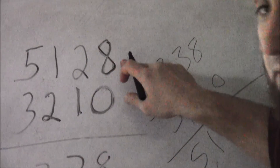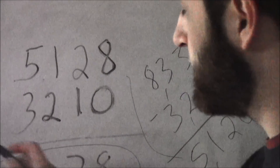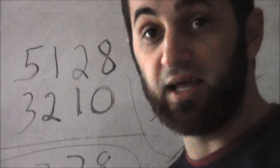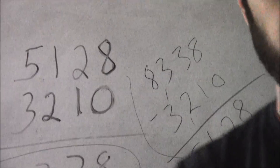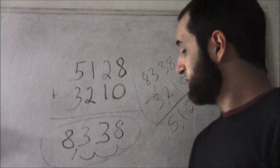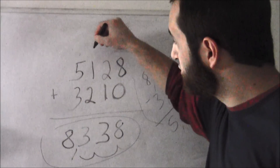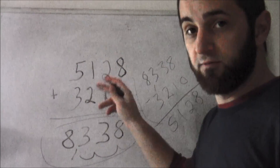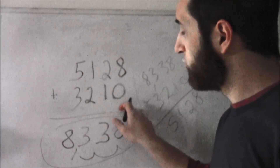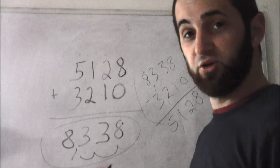Five thousand one hundred and twenty eight — and there we go. So we know that eight thousand three hundred and thirty eight was the correct answer to that addition problem. We added a large number: four digits plus four digits, one digit, two digit, three digit, four digits.